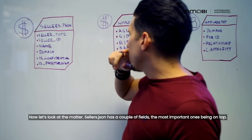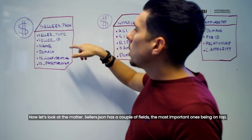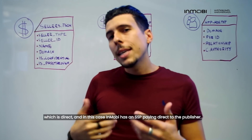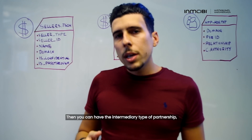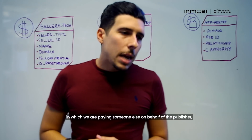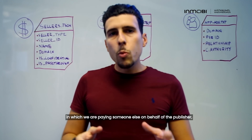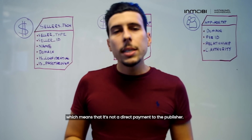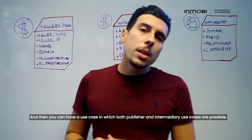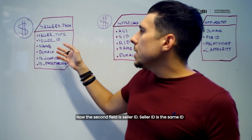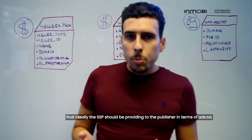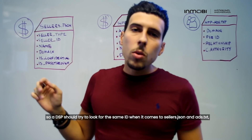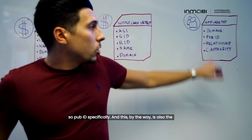Sellers.json has a couple of fields, the most important ones being on top. We have the seller type, which can be of three types. You can have publisher, which is direct — in this case, an SSP is paying directly to the publisher. Then you can have the intermediary type of partnership, in which we are paying someone else on behalf of the publisher, meaning it's not a direct payment to the publisher. And then you can have a use case in which both publisher and intermediary cases are possible. The second field is seller ID — this ID is the same ID that the SSP should be providing to the publisher in terms of ads.txt, so DSPs should look up the same ID in both sellers.json and ads.txt, specifically the pub ID.